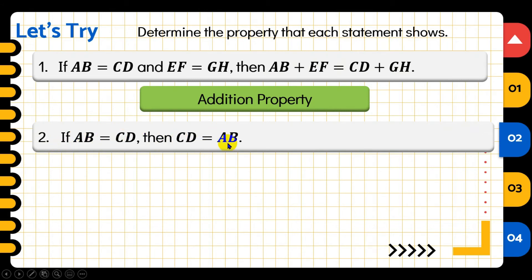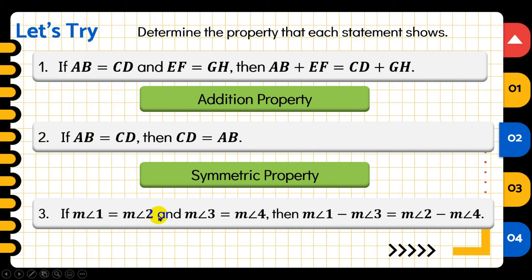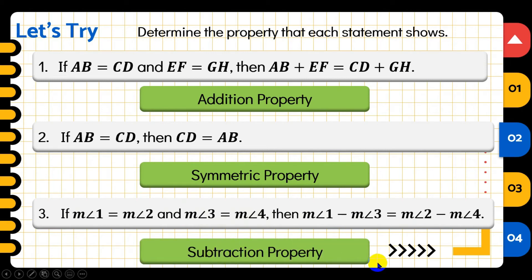Number three: if measure of angle 1 equals measure of angle 2, and measure of angle 3 equals measure of angle 4, then measure of angle 1 minus measure of angle 3 equals measure of angle 2 minus measure of angle 4. We have subtraction on both sides of the equation, and what is subtracted is equal (angle 3 equals angle 4), so this is the subtraction property of equality.